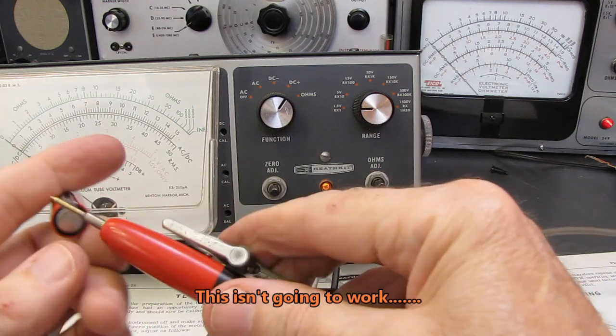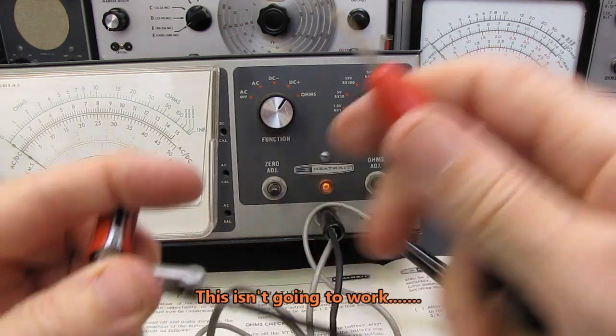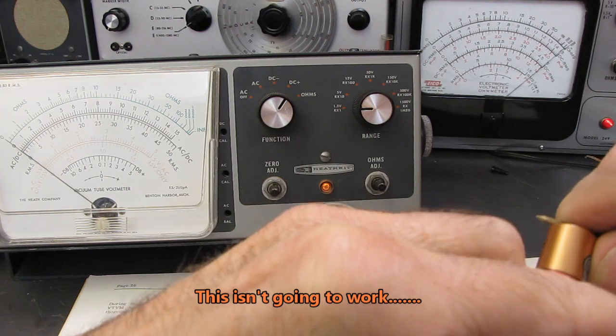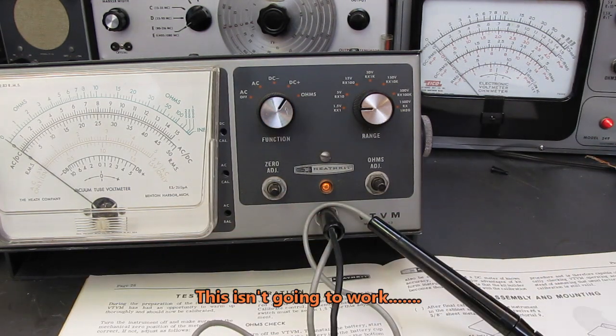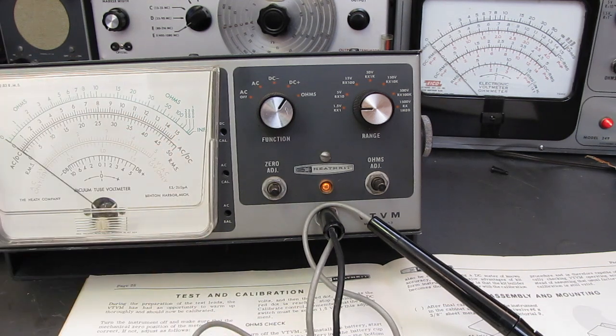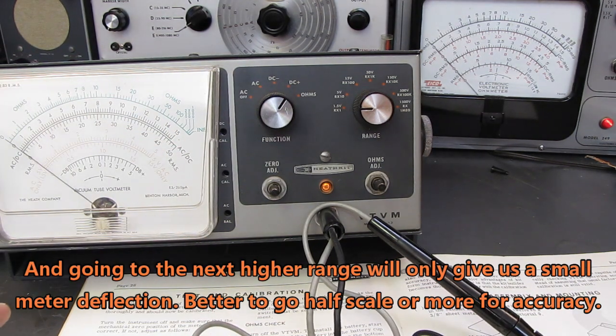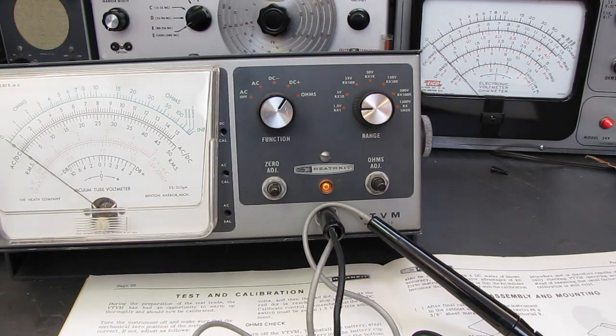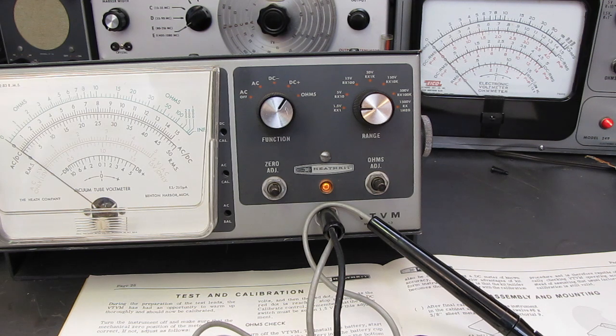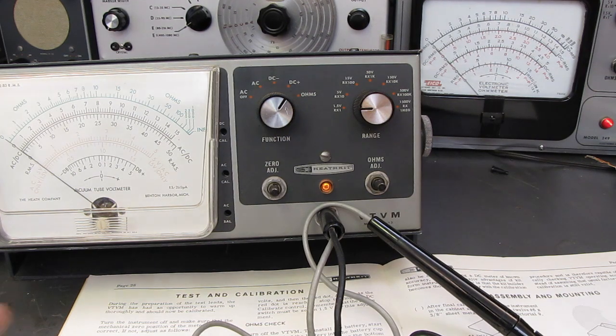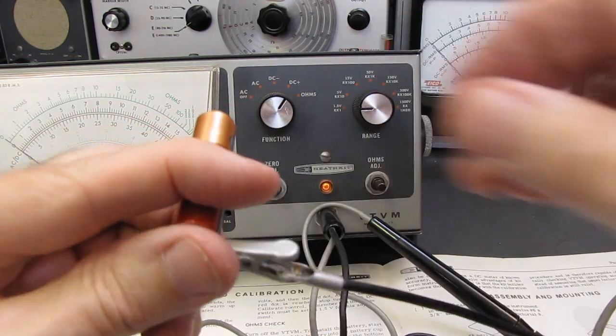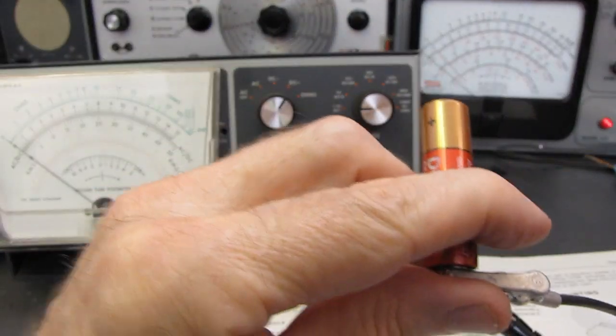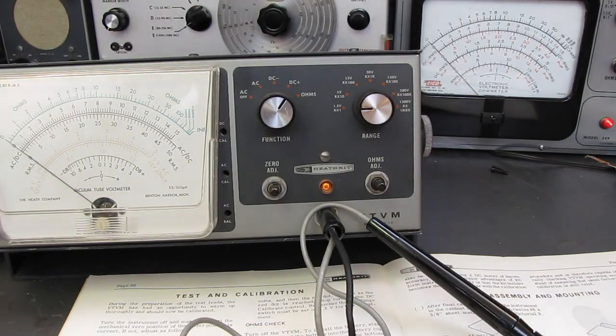What I'm going to do is use this as my reference or this as my standard because I know this meter is very accurately calibrated. So we're going to set this one to DC volts. We will set this one to 1.5. And I should have a fresh battery over here. This one should work. And make sure I set this one to DC. It is set to DC.